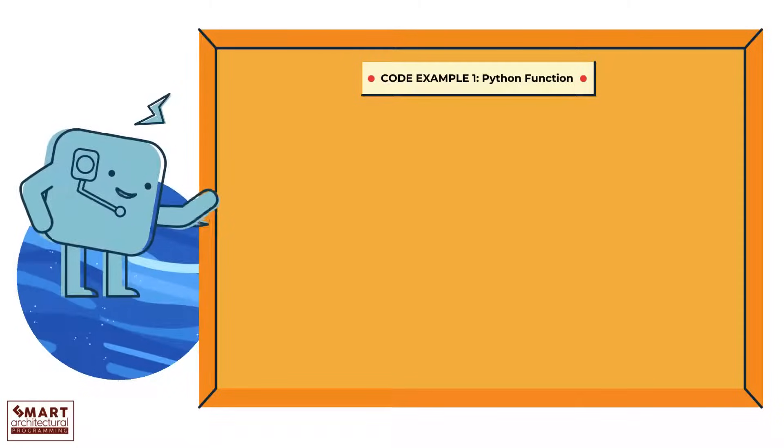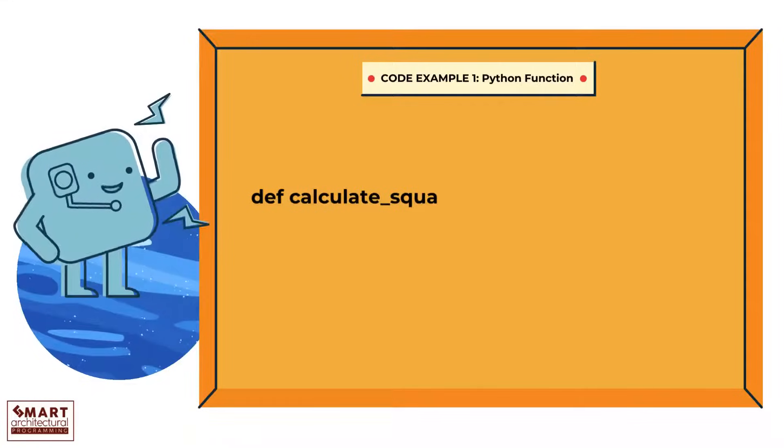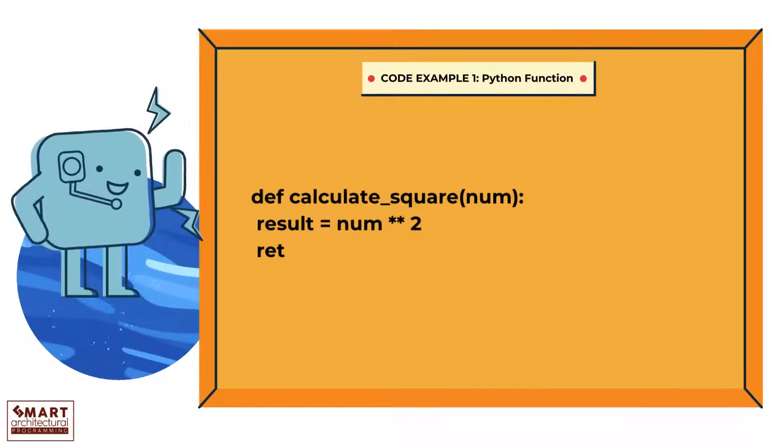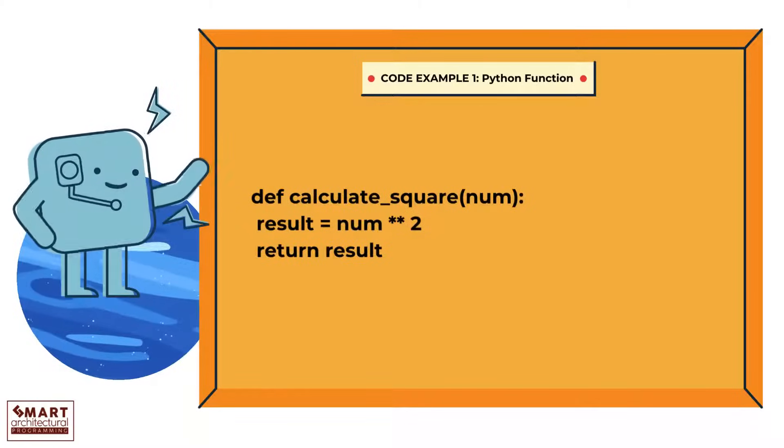Code example 1: Python function. def calculate_square(num): result = num ** 2, return result. The calculate_square function calculates the square of a number and returns the result.